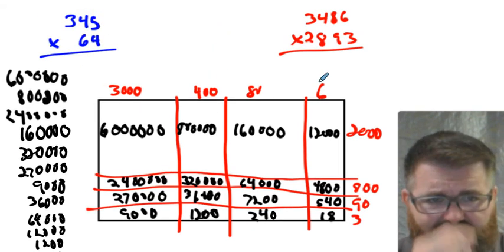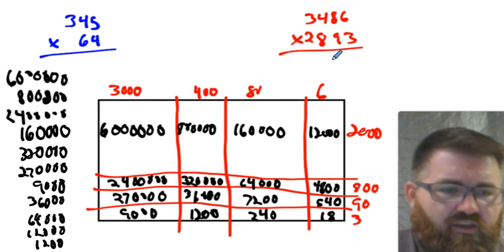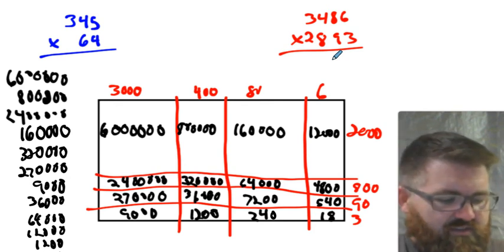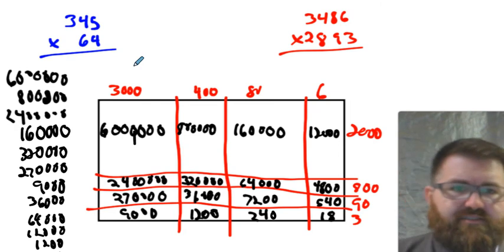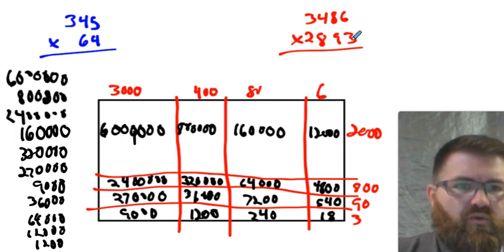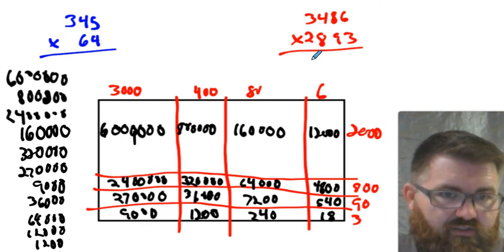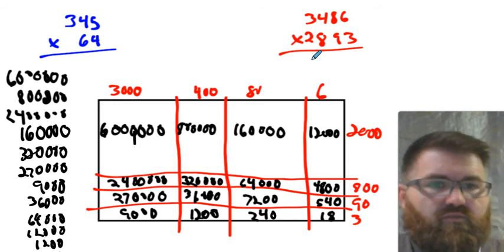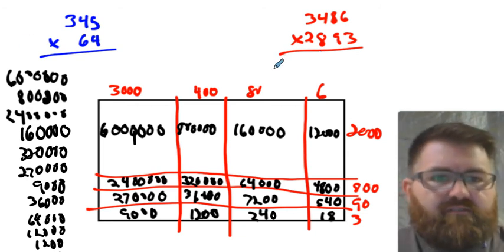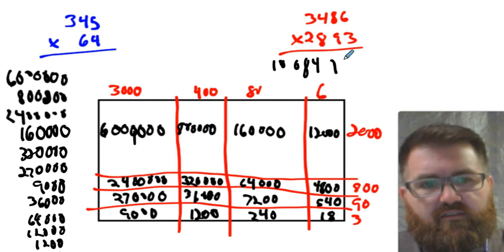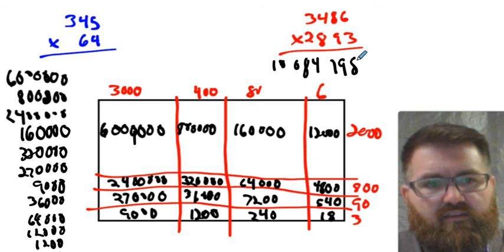So if we were to add those all together we should get the correct product. I'm just going to pull out my calculator here and just make sure we get a final result. If we were to use this algorithm, we'd be doing exactly the same thing — getting the ones, tens, hundreds, and so on. Let's do it quickly so we can confirm. 84,998. Nice and slow.